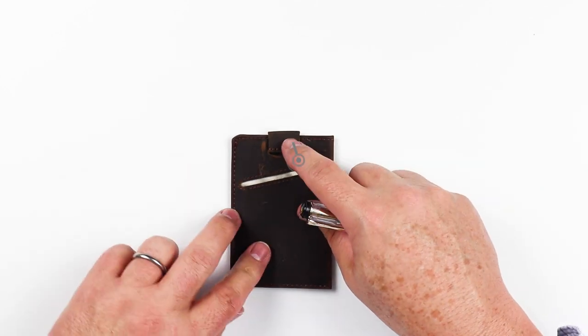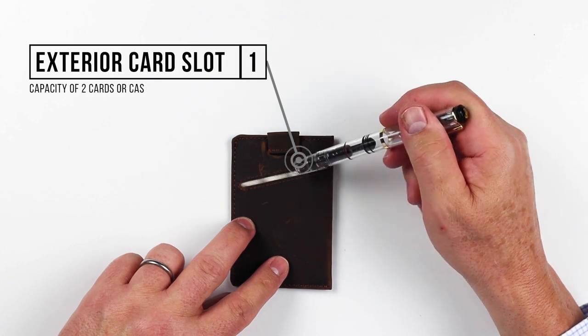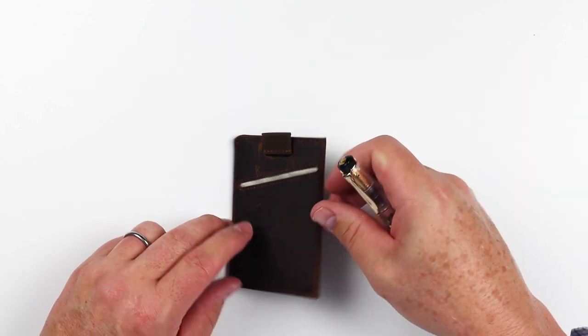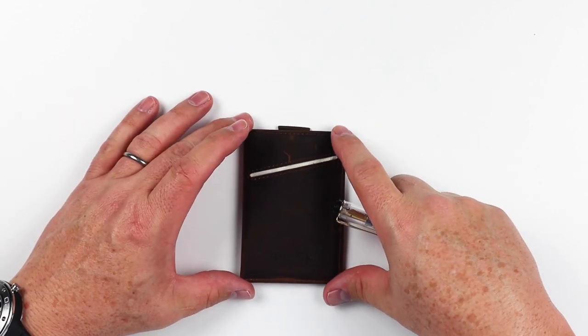As we go to the back, underneath that, we have yet another quick access card slot here. That is a review of the features of the Husk Slim Wallet.